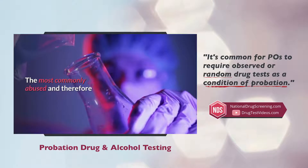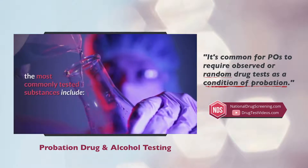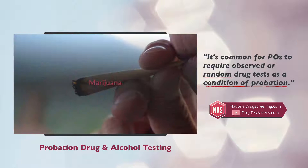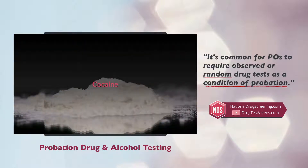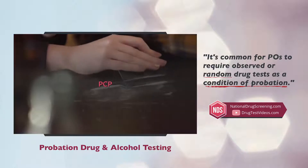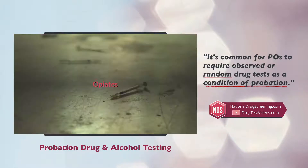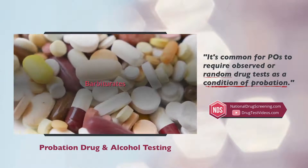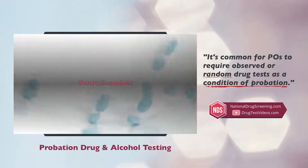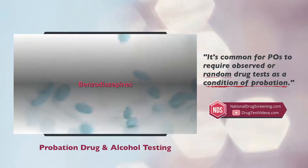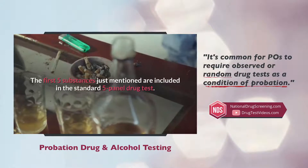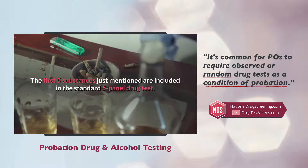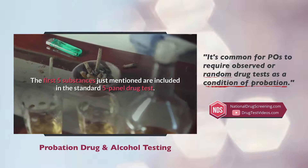The most commonly abused and therefore the most commonly tested substances include marijuana, cocaine, PCP, opiates, amphetamines, barbiturates, and benzodiazepines. The first five substances just mentioned are included in the standard 5-panel drug test.